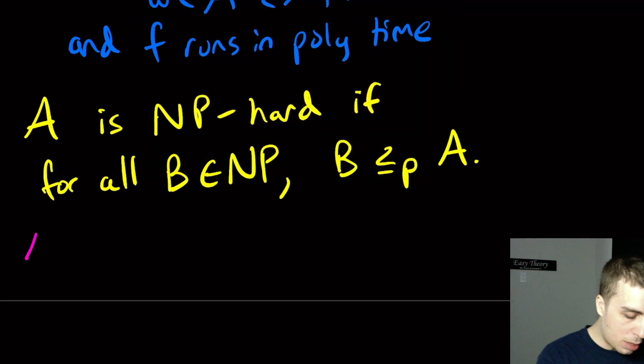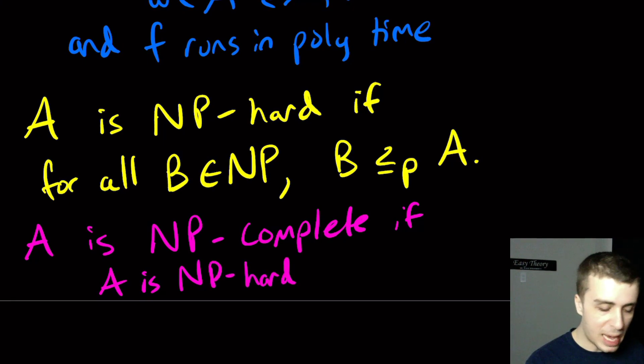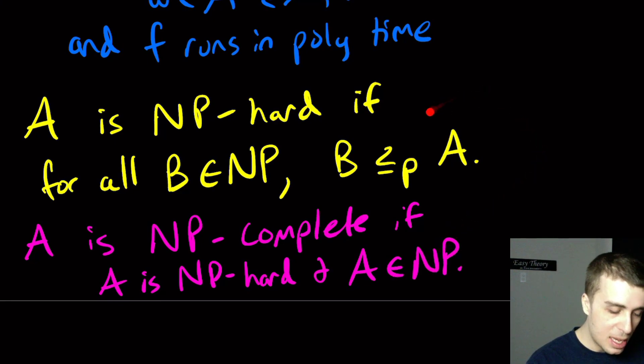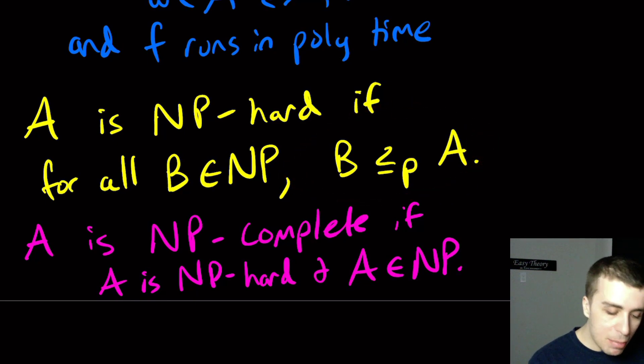But we're going to make one additional qualification. A is NP-complete if A is NP-hard, so that means everything in NP reduces to A, and A is also in NP. So you may think this is kind of silly, NP-hard kind of sounds like you're in NP already. It turns out that that's not necessarily true. In fact, ATM, the undecidable problem is NP-hard, but it's not NP-complete because it's not in any finite time language class. So we want to talk about NP-complete because those are the problems in NP, but are the hardest ones.